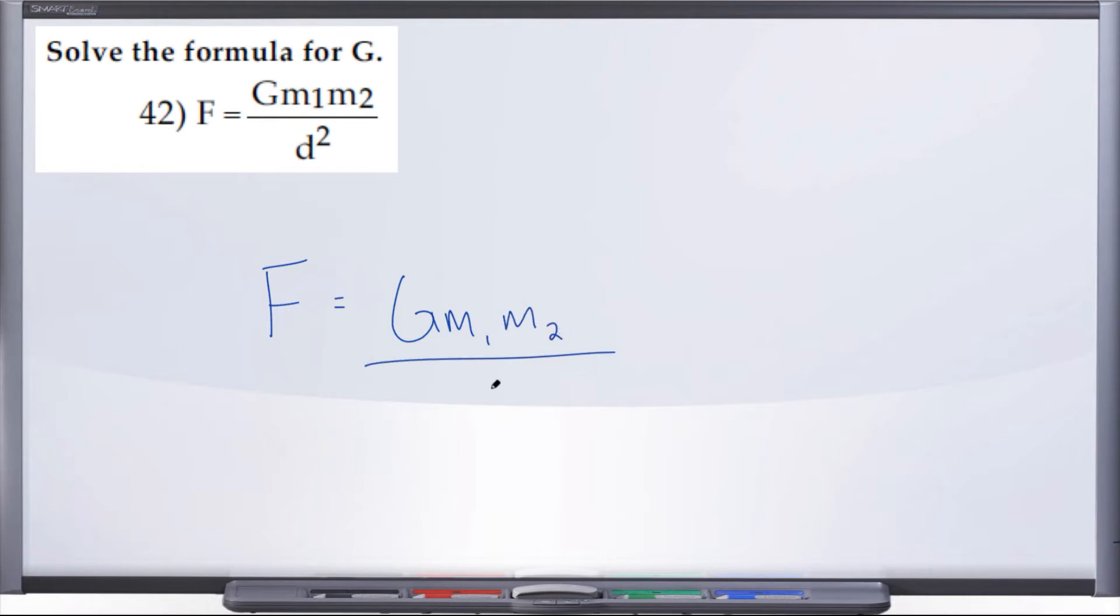Well, first things first, let's clear this fraction. We'll multiply by d squared on both sides. So here on the right, d squared cancels with d squared.